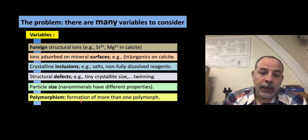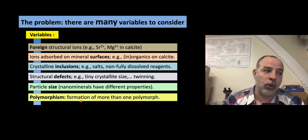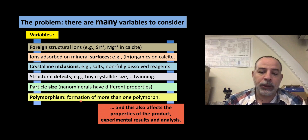Polymorphism is another issue: sometimes what happens is that we try to produce only one polymorph and we end up with two or three. Very commonly, if we try to produce calcite, we may get 99% calcite but 1% aragonite or vaterite or something else, and we don't want that in some cases. All these variables affect the properties of our product, and therefore they are going to affect the experimental results and the analysis if you are using them in the laboratory.